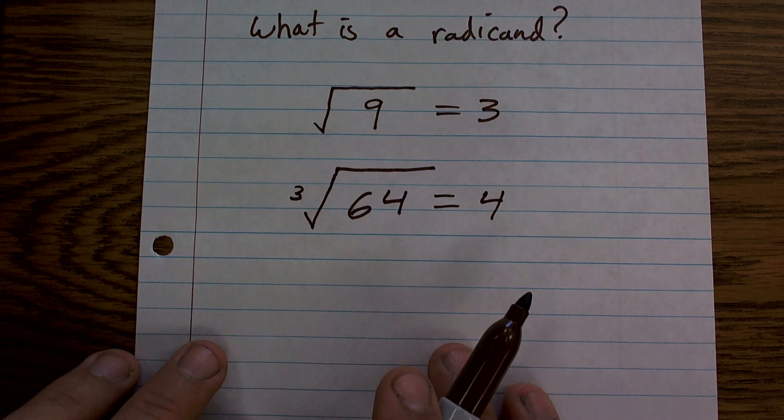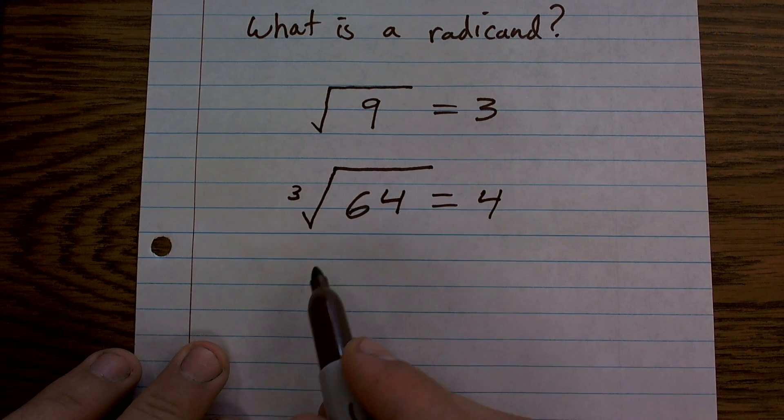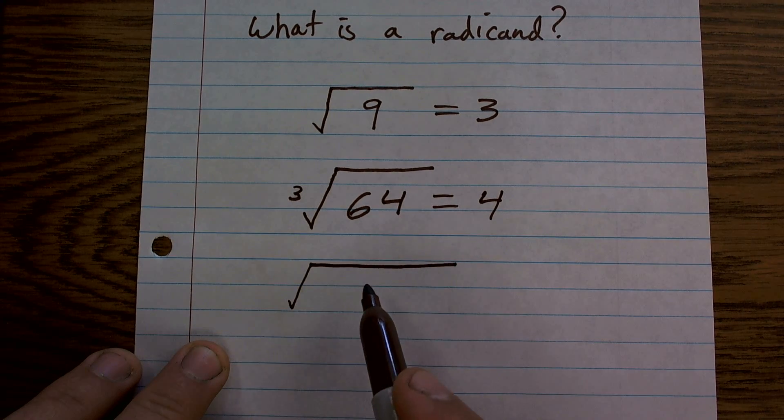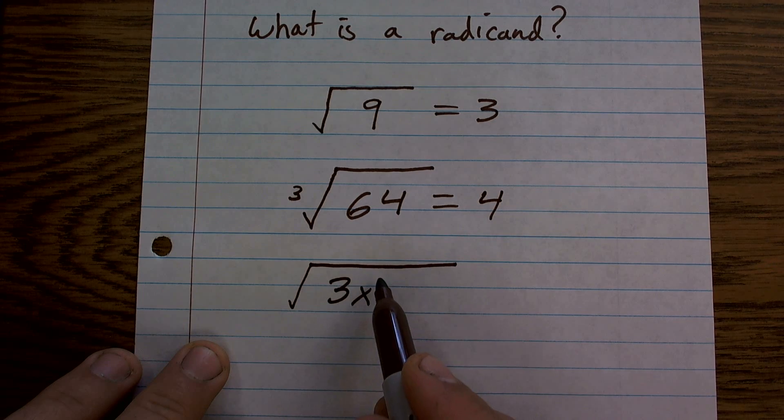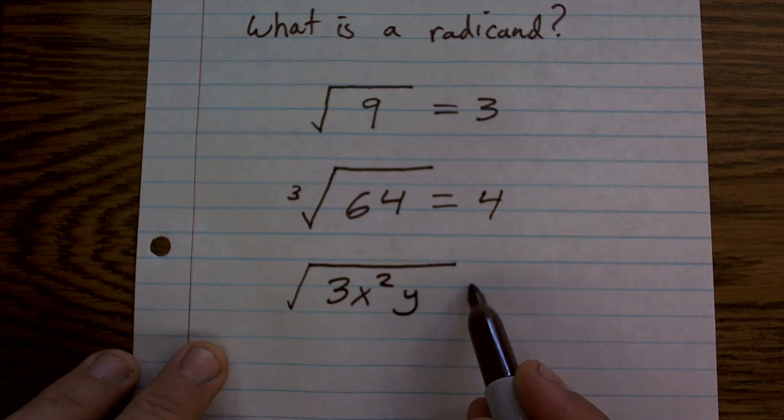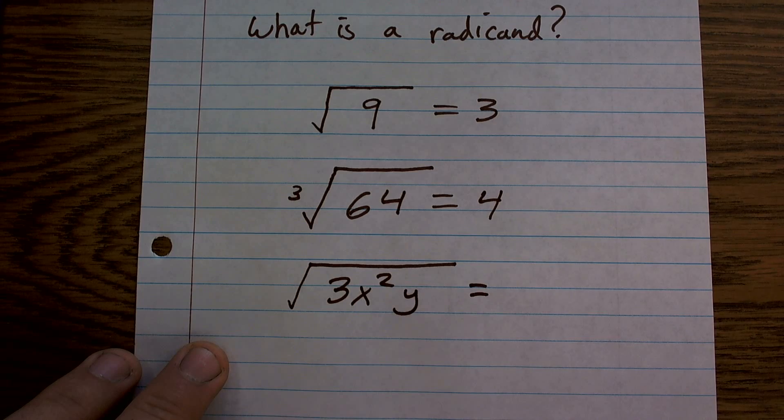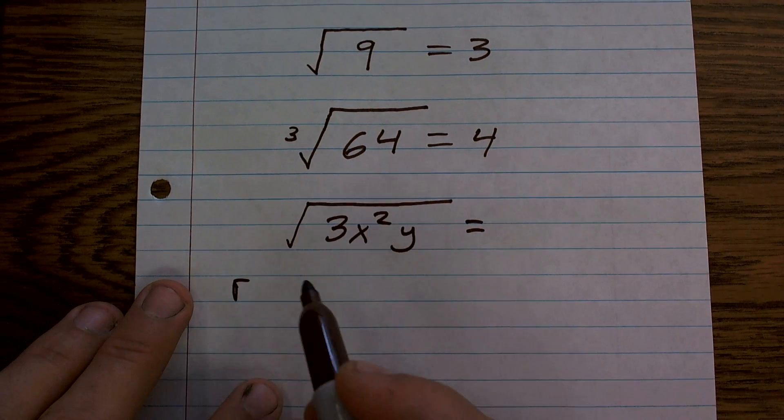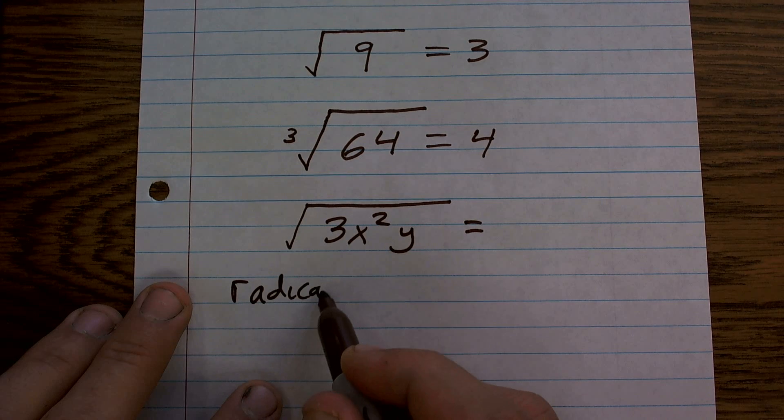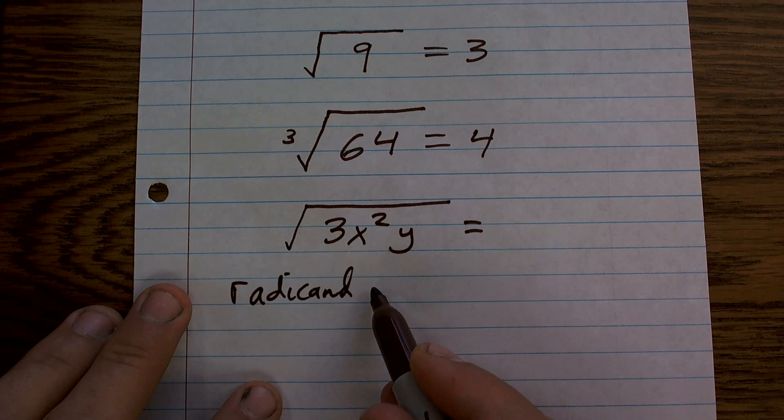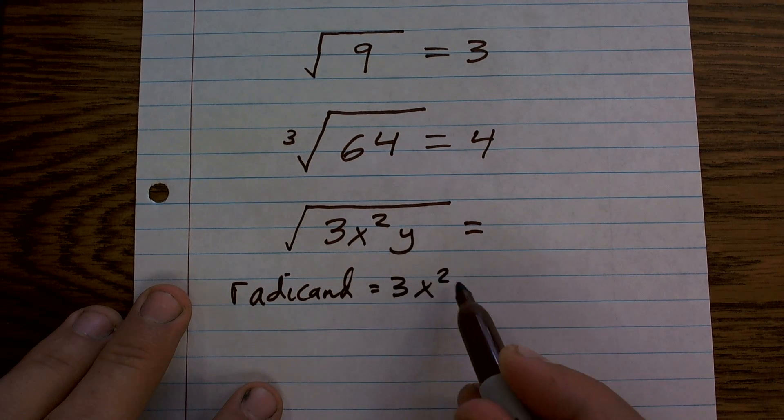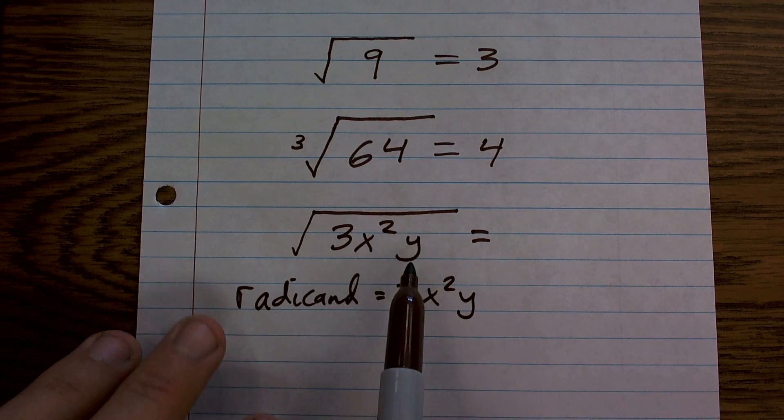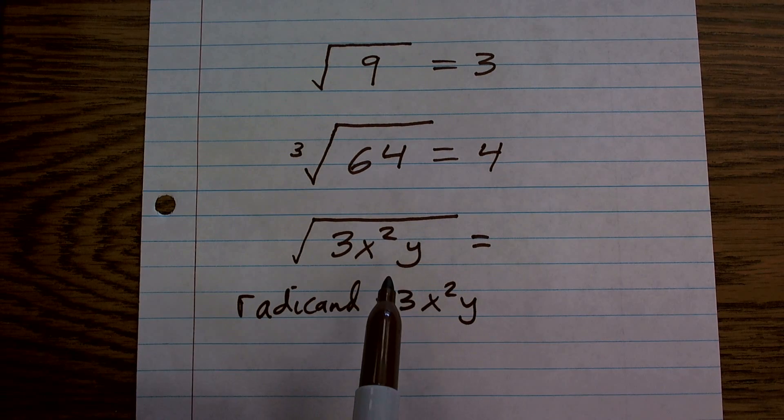Now, what about if I make something kind of crazy up, and let's just go back to the square root. But let's say I give you 3x squared y. Now, I don't need to go through a whole tutorial on how to solve these, but you can see that the radicand is still just going to be 3x squared y. It's everything that's inside of your square root.